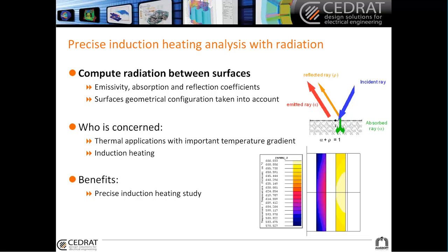All surfaces will be taken into account, which means that when you have heating only from radiation between two bodies, it will be very well modeled and you will have more precise induction heating studies. This is very important for thermal applications with significant temperature gradients.